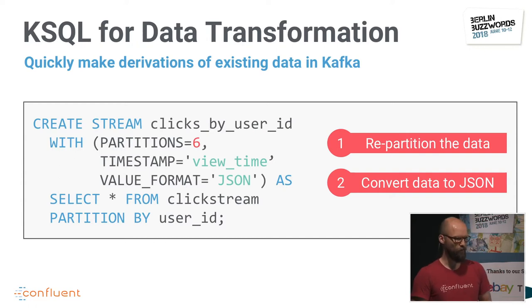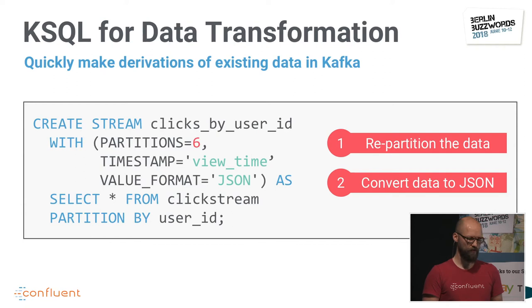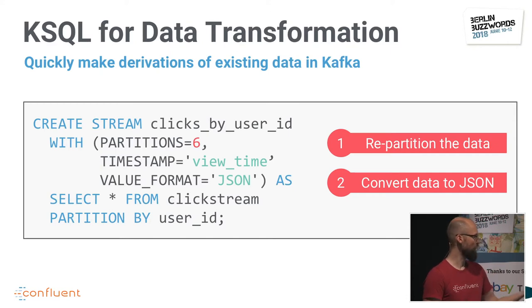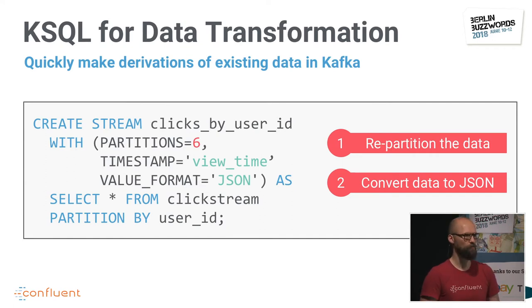Of course, KSQL can be used for more mundane tasks. Often in Kafka you want to convert data — for example, your input data is in JSON but you want it in Avro — or you want to repartition your data to scale out. That's very easy to do with KSQL as a one-liner: you specify the number of partitions or the output data format. In this case, we're converting whatever format the input stream is in into JSON format.